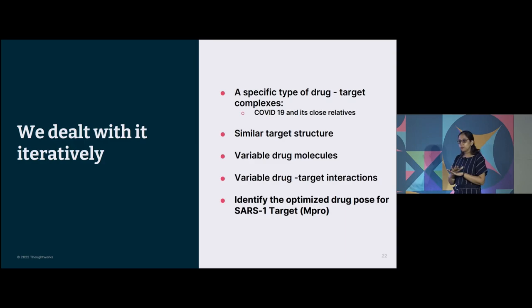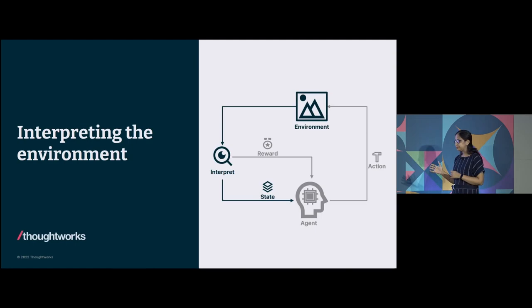So that is where we decided to deal with it iteratively, that rather than going with the entire drug target universe, let's look at a smaller piece first and see how reinforcement learning is doing a job there. So we picked up COVID and its close relatives as targets. We picked up different drug molecules that can have an ability to bind there. So we have less diversity in the target, the drug diversity stays there, we will definitely have different interactions. And now question for us is to identify the optimized drug pose for specifically SARS-CoV-1 targets.